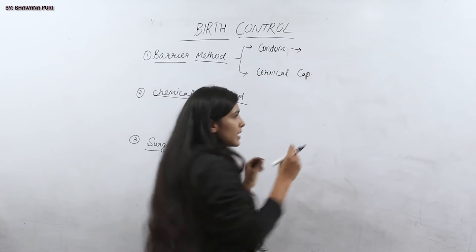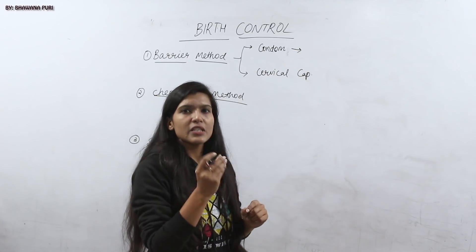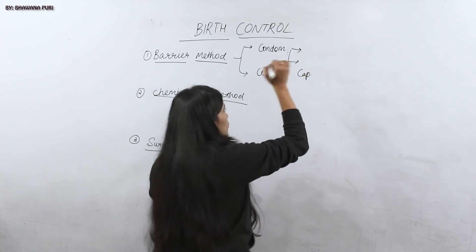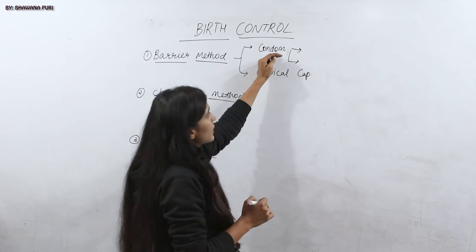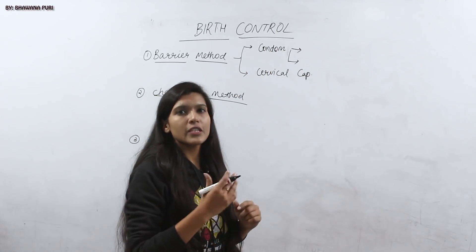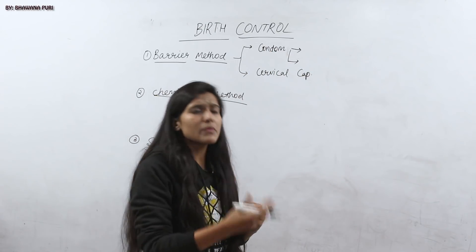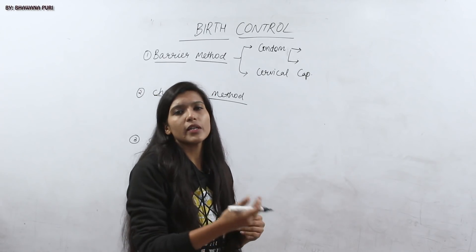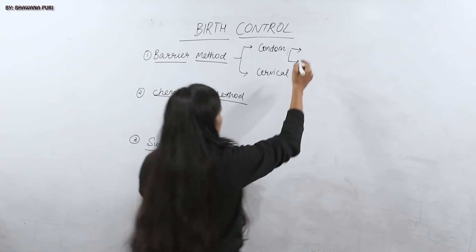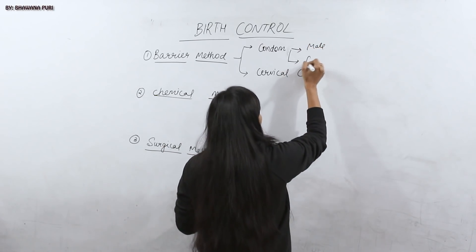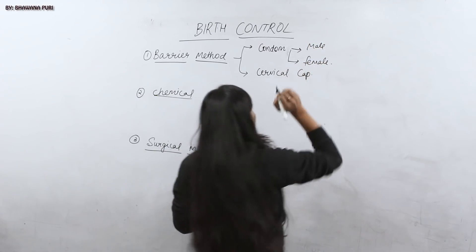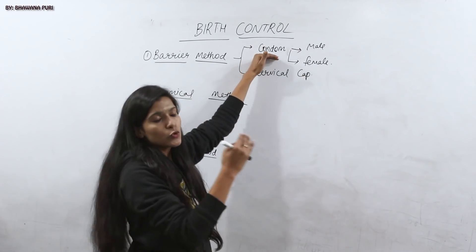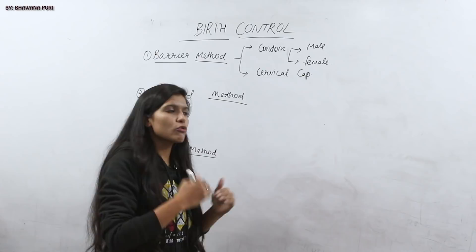Condoms are basically made of a very thin latex sheet structure, which is available individually for males and females. A male can use it to cover the penis so that when sperm is released, it cannot enter the female body. So both male and female can use condoms individually, which act as a physical barrier so that sperm and egg are not able to contact each other.